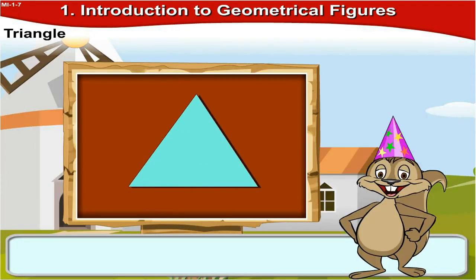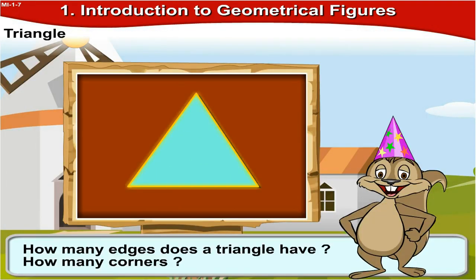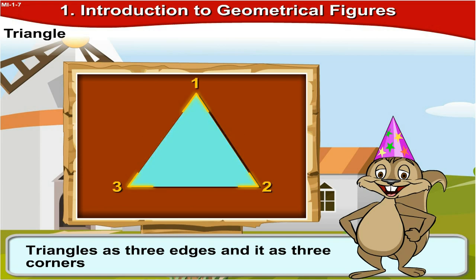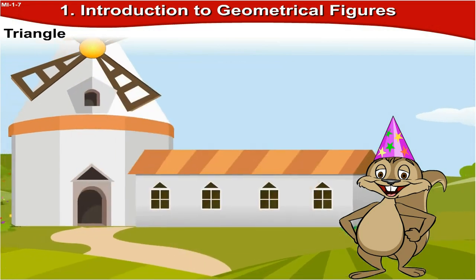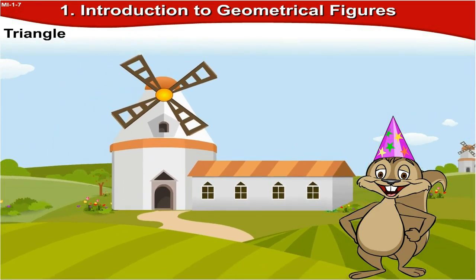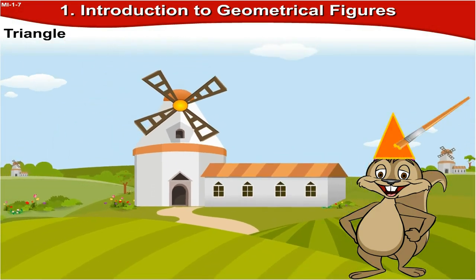Triangle. How many edges does a triangle have? How many corners? A triangle has three edges and it has three corners. Find this shape in your surroundings. For example, the birthday cap.